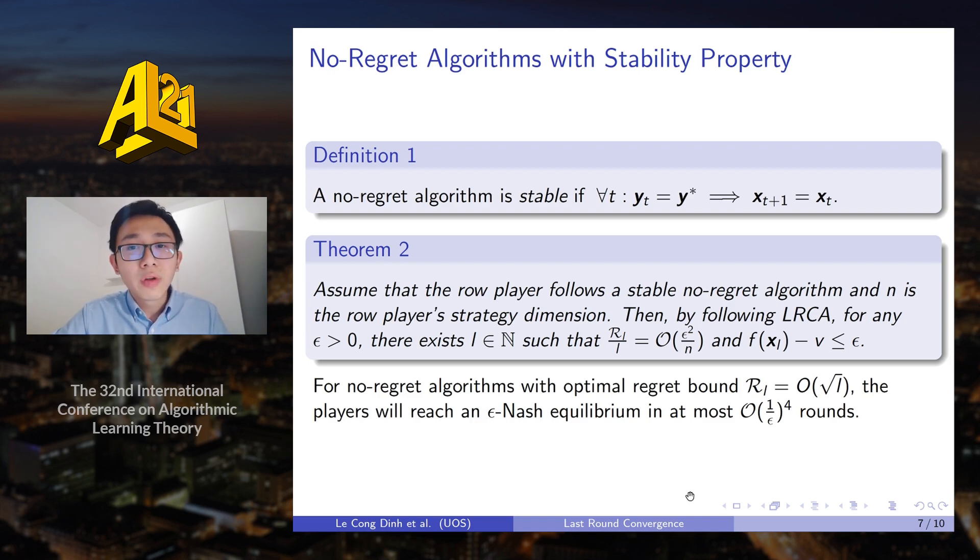And in the case of optimal regret bound square root of T, then the players will reach epsilon-Nash equilibrium in at most 1 over epsilon to the power of 4 rounds.